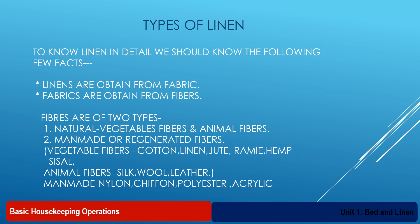Animal fibers are obtained from animals — for example, silk, wool, and leather — from animals like silkworm, sheep, goat, and different types of animals. Then we have man-made or regenerated fibers, and the examples are nylon, chiffon, polyester, and acrylic. These are the different types of fabrics from which different linens are obtained, and these linens are used as bed linens in a hotel.